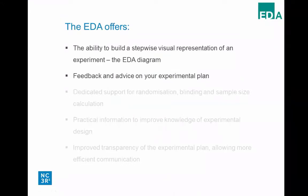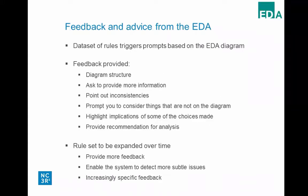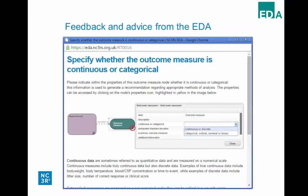The second thing the EDA does is provide feedback on your experimental plan. Once you've built your diagram, you can critique it and get feedback based on a dataset of rules included in the back end of the system, using computer-based logical reasoning. Feedback can come in different forms: it can flag issues with the diagram structure, ask you to provide more information such as whether an outcome measure is continuous or categorical, or ask you to indicate the blinding stages during assessment of the outcome — with information on why blinding is important and the different ways you can blind different stages.